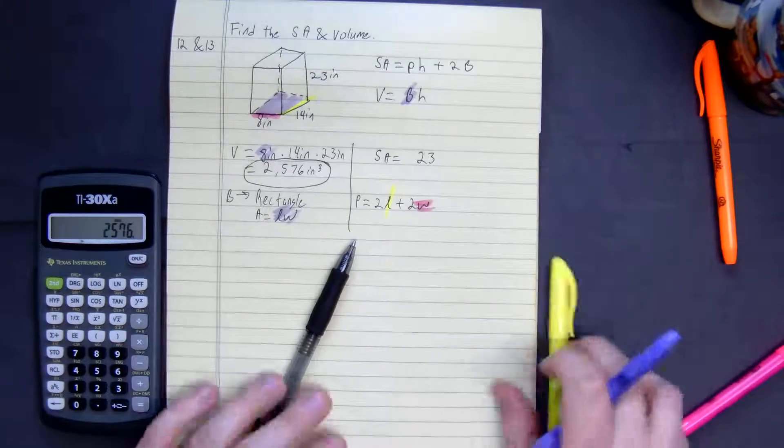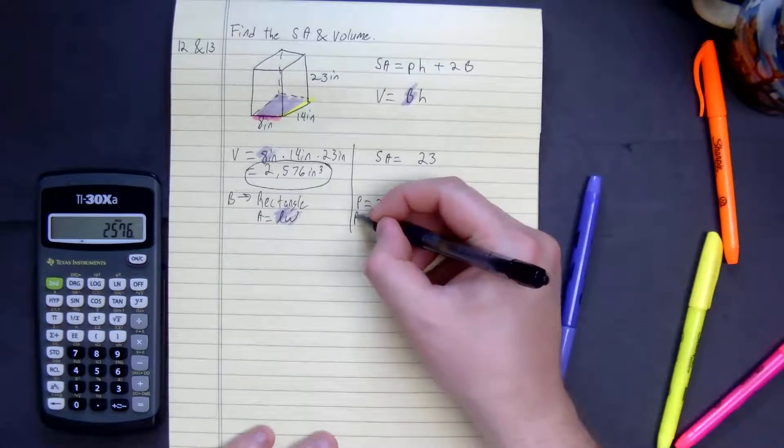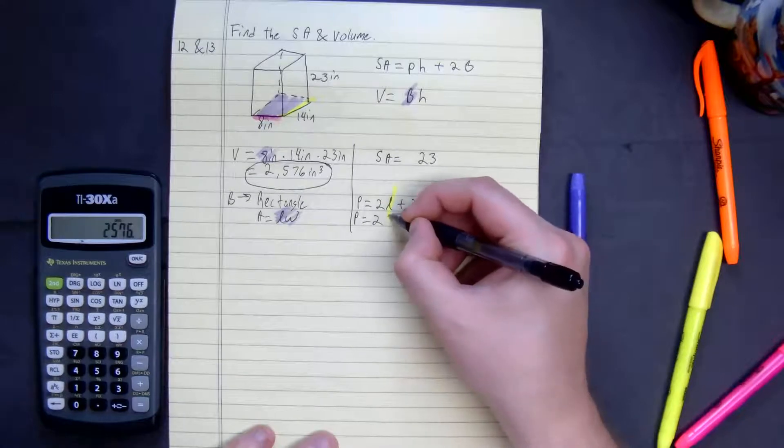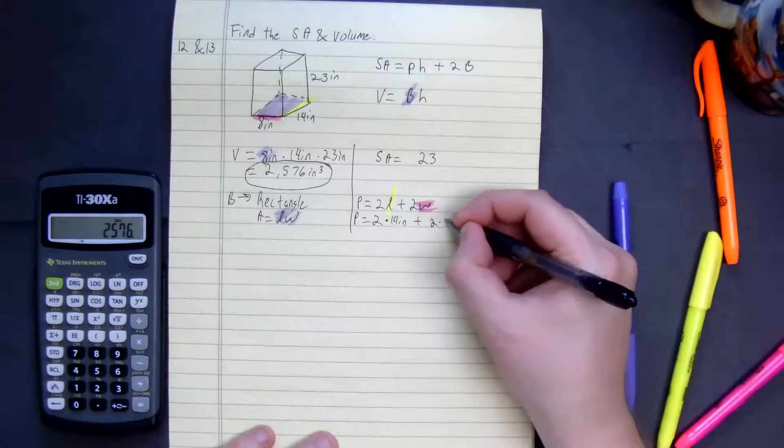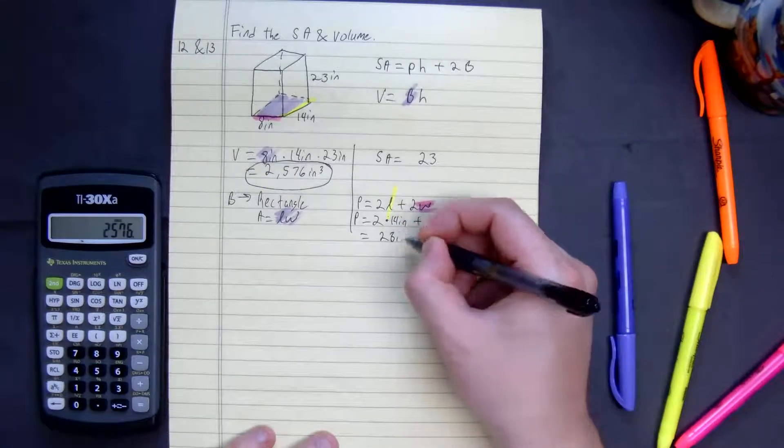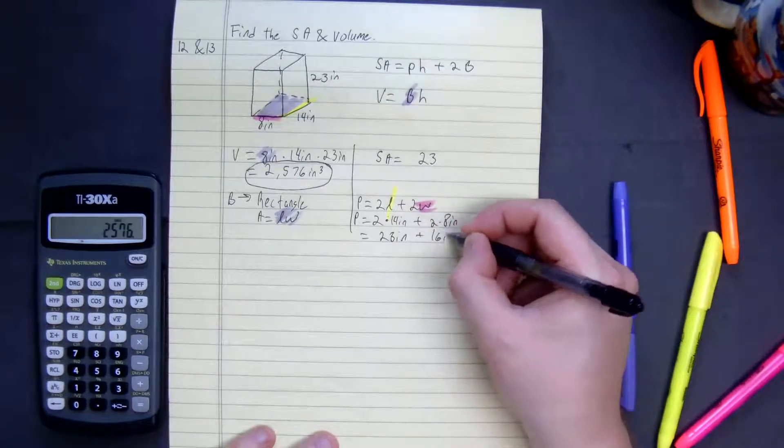You could have just added them all up to be honest, but we're just doing it this way. Perimeter is equal to 2 times 14 plus 2 times 8 inches, which is equal to 28 inches plus 16 inches.